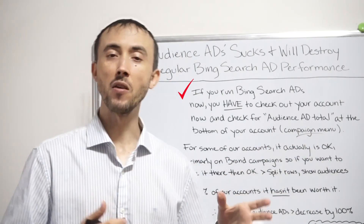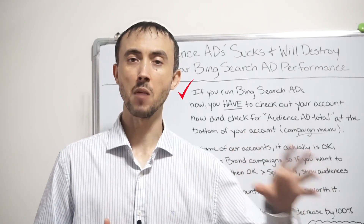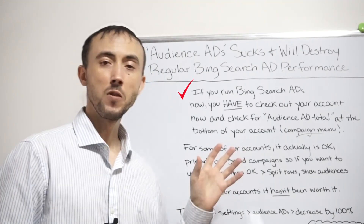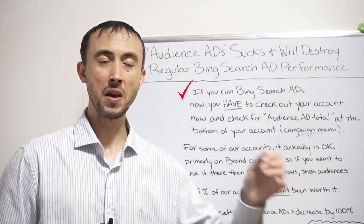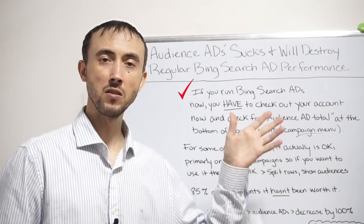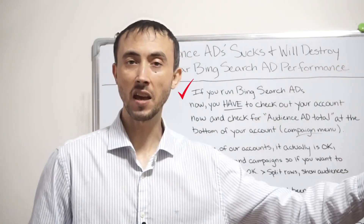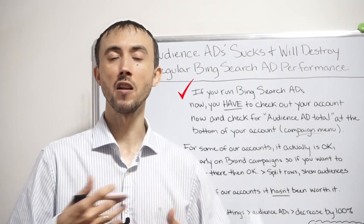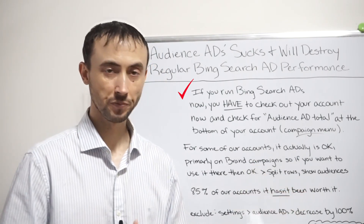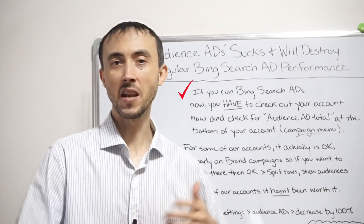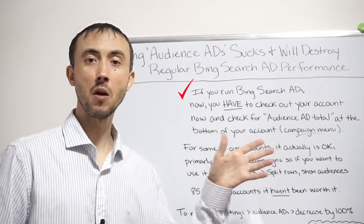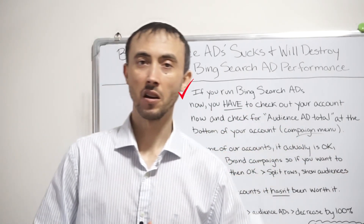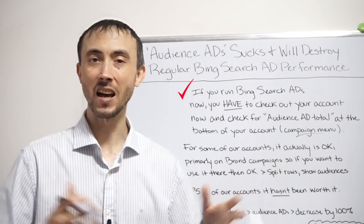The same thing applies if you set up a search campaign on Bing fresh through Bing's ad interface, or if you import your campaigns from Google using Bing's import tool. These display network ads will be turned on automatically — it's been that way for a few months now — even if you were not using display network or display select ads on Google.